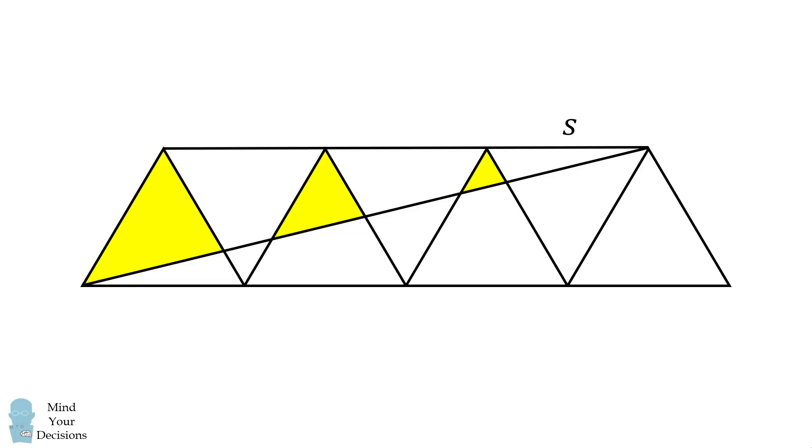Suppose each equilateral triangle has a side length equal to s. Then this is equal to s, this is equal to s, and this side is also equal to s. Thus, the side lengths will be in parts of three. The middle triangle will have a side length that's equal to two-thirds multiplied by s, and the smallest triangle will have a side length that's equal to one-third multiplied by s.